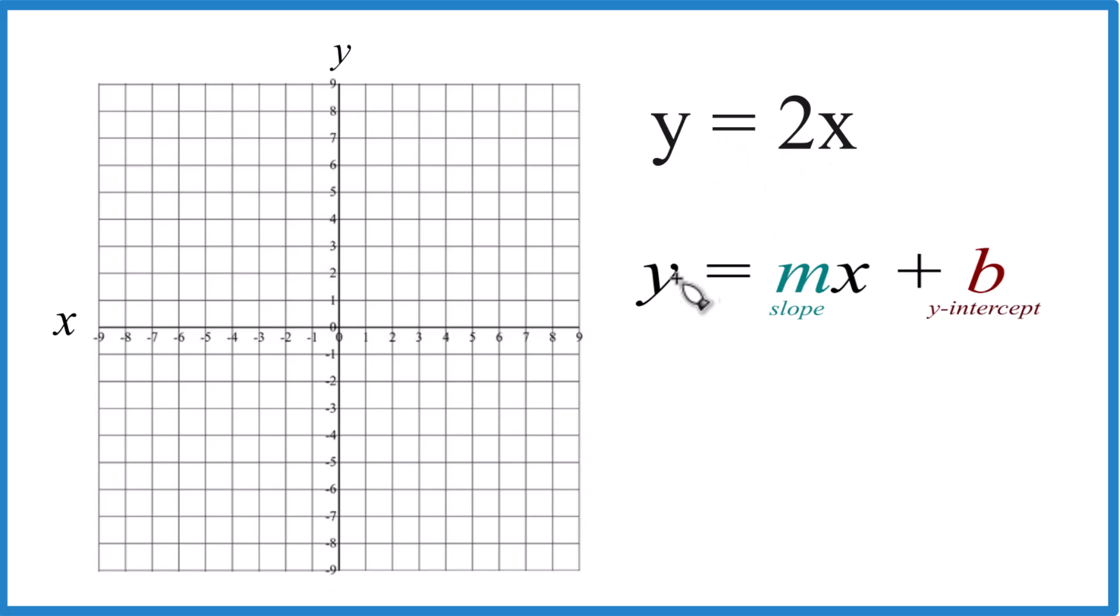So y equals 2x. We have y equals mx plus b, but we don't have a b up here. So since we don't have our y-intercept, we can just say plus zero. That means the y-intercept is zero.